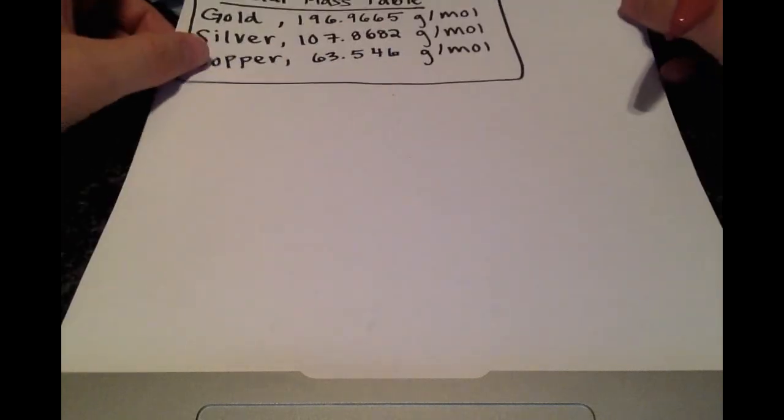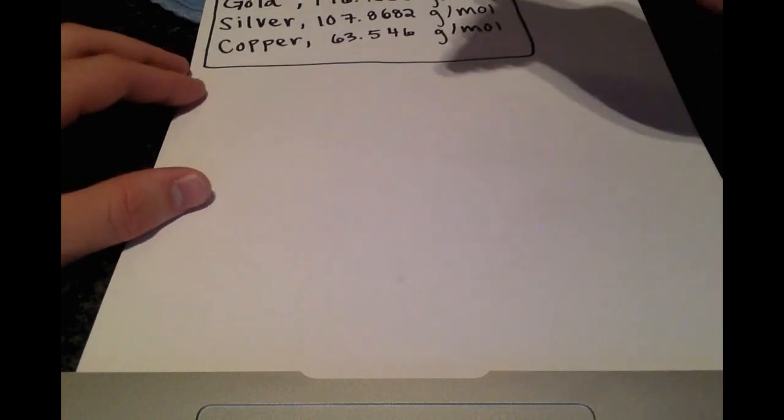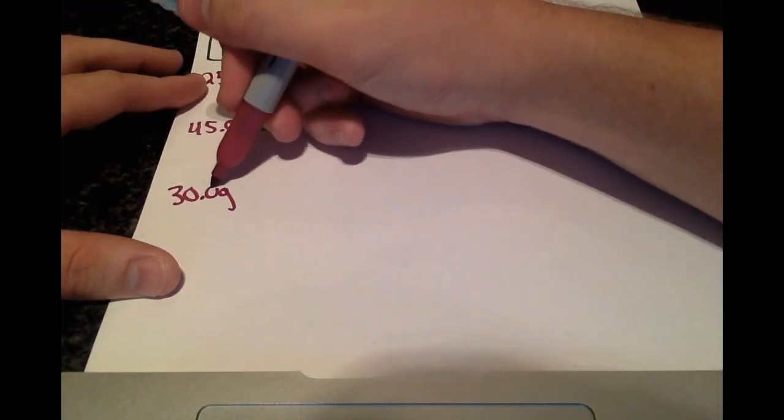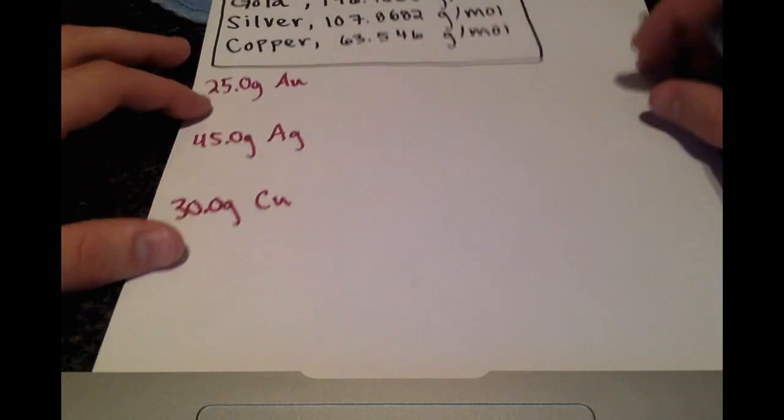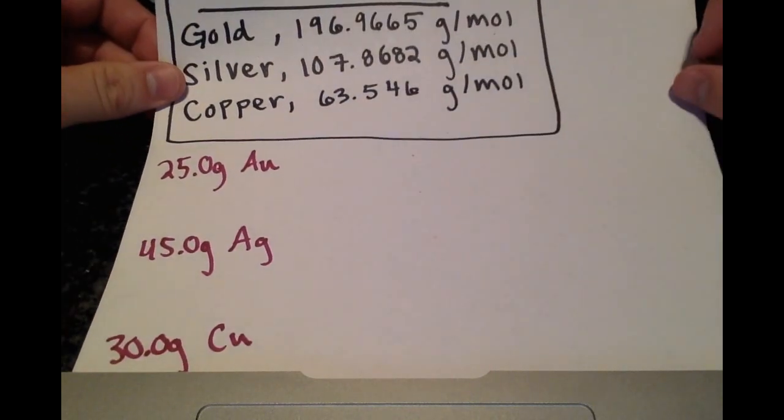So what I would recommend doing is writing out the grams of each component we have and leaving a little bit of space. So we have 25 grams of gold, 45 grams of silver, and 30 grams of copper. And we want to get all of these into moles. So we'll use these convenient conversion factors given here and plug those in.